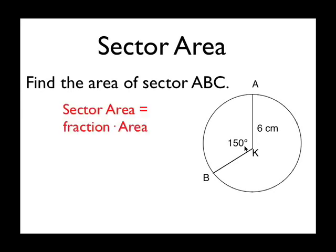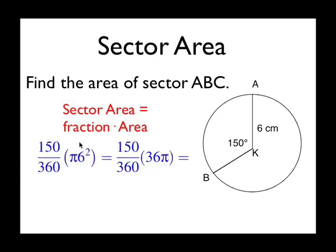To find the sector area, we want a fraction of the area. So like the arc length, the fraction is the central angle over 360, but this time we're going to be using the formula for area, which is pi r squared.